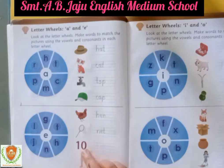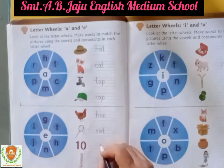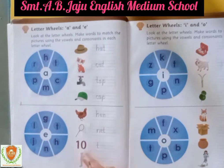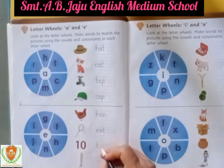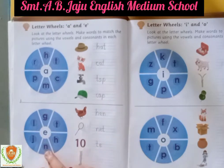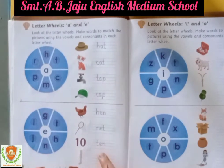Which number is this? Number 10. So first letter will come letter T. Here is letter T. Write down small t, then write down e, and write down n. T, E, N — ten.